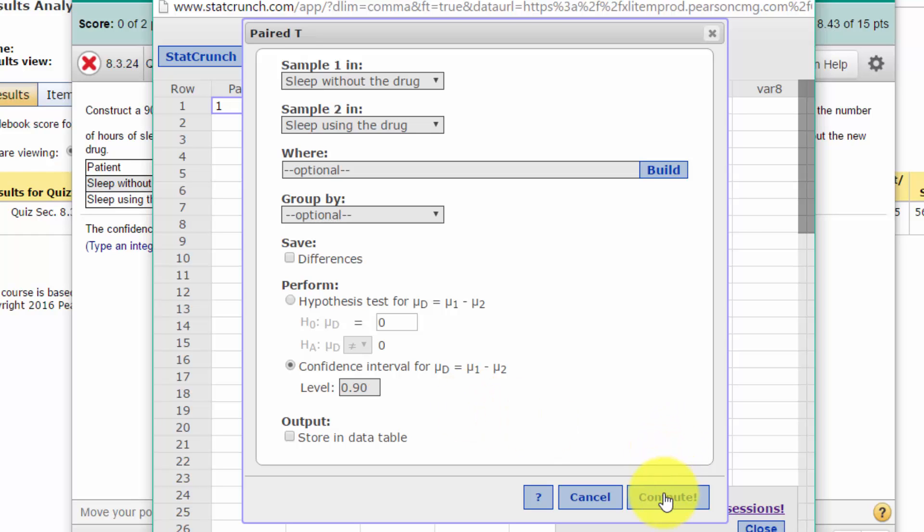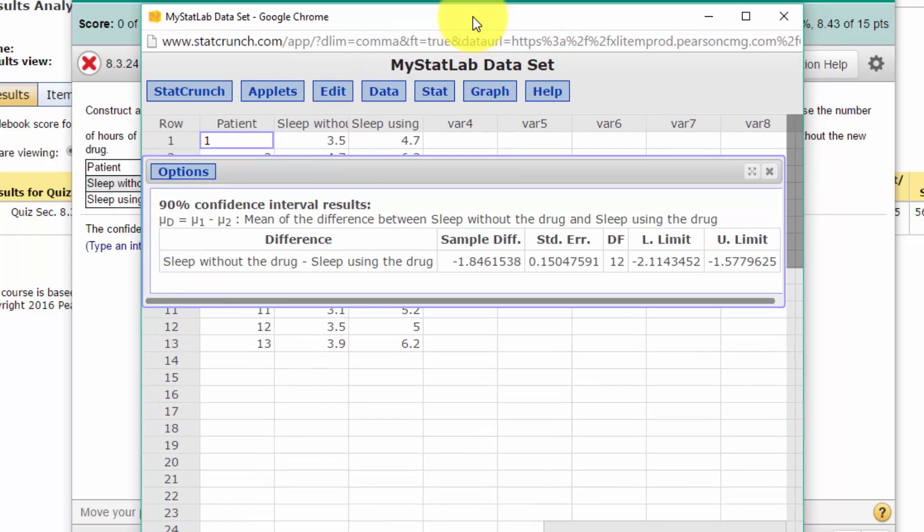So all we do is click on compute and we get the confidence interval there.